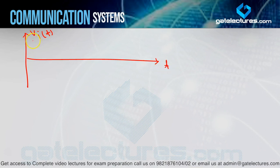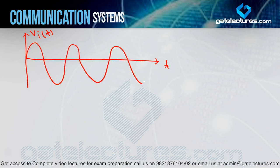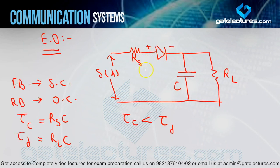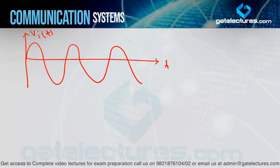Suppose Vi is your input — a sinusoidal waveform. For this sinusoidal waveform, we need to check what the output will be when this sinusoidal waveform is input for the envelope detector. Now, the diode will be forward biased when P is greater than N, meaning whenever your input is increasing, the diode will be forward biased, and when your input is decreasing, the diode will be reverse biased.